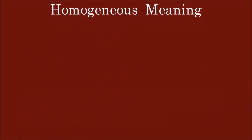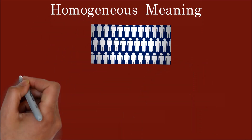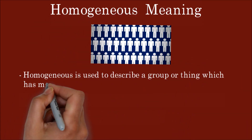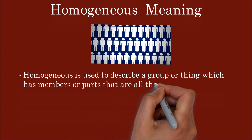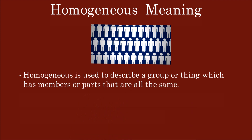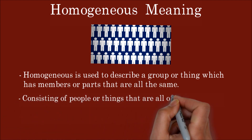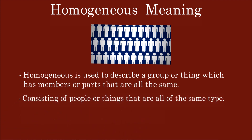Homogeneous is used to describe a group or thing which has members or parts that are all the same, consisting of people or things that are all of the same type.